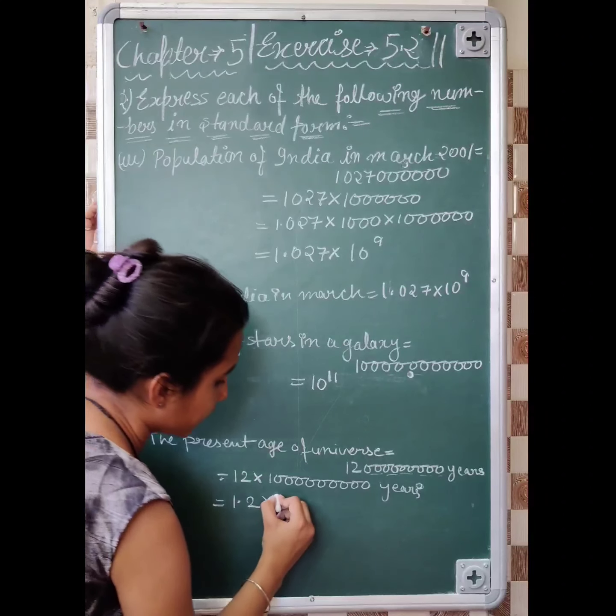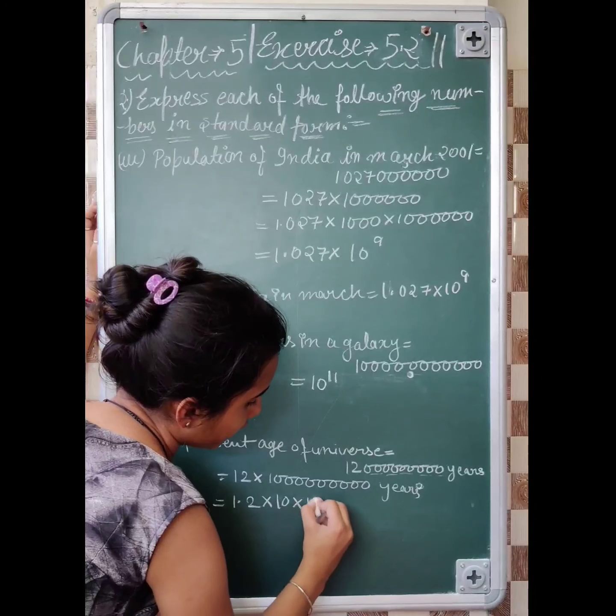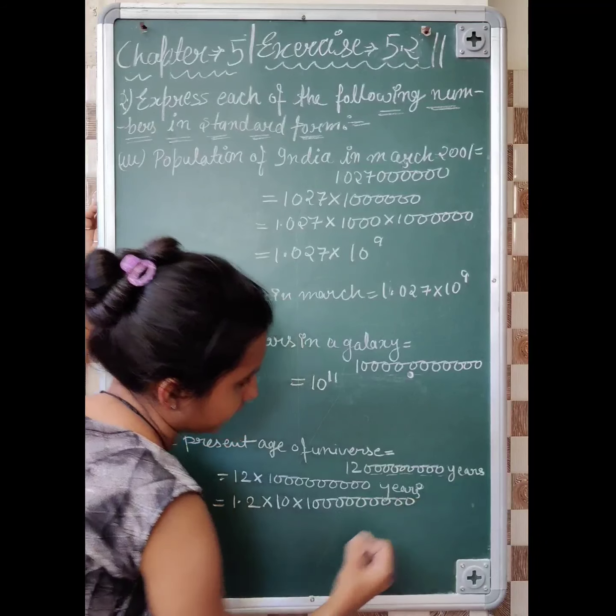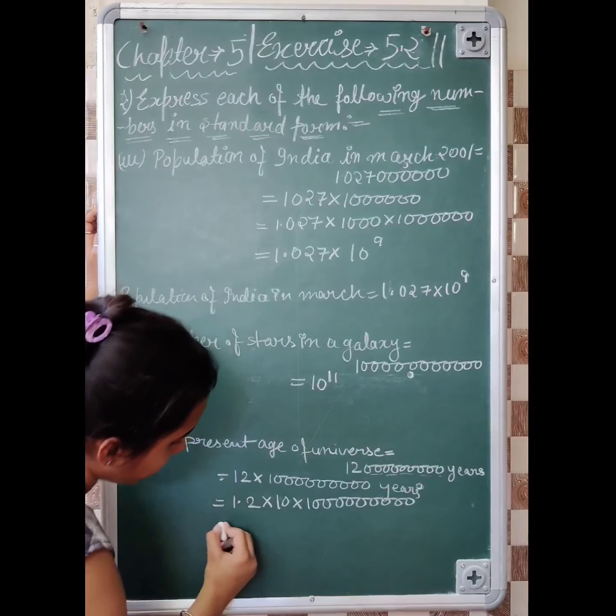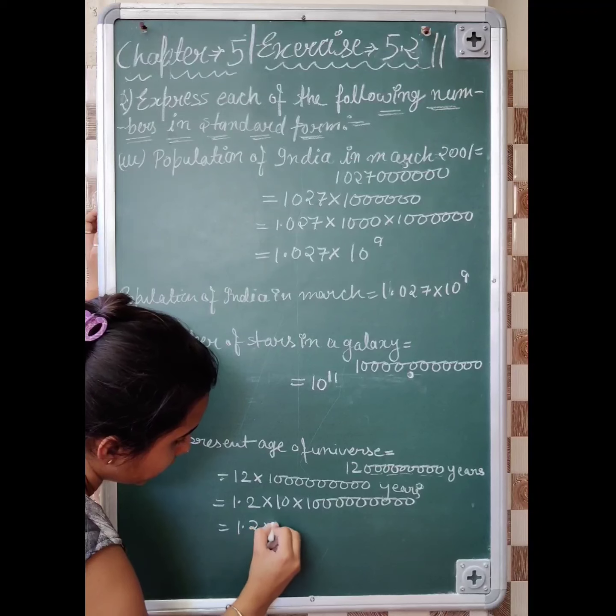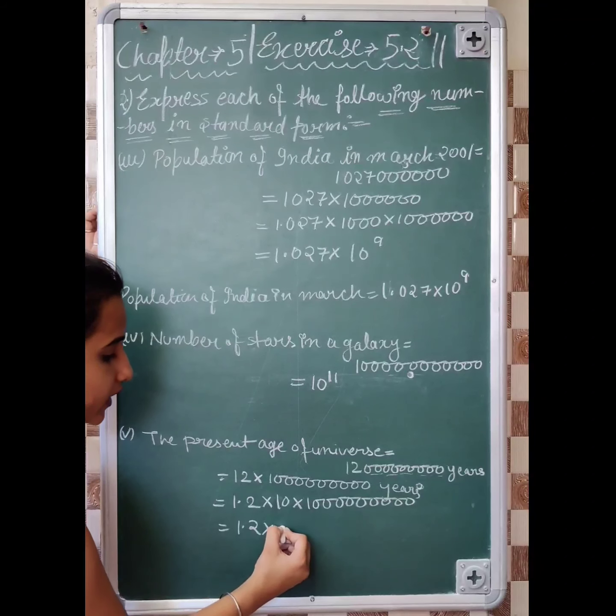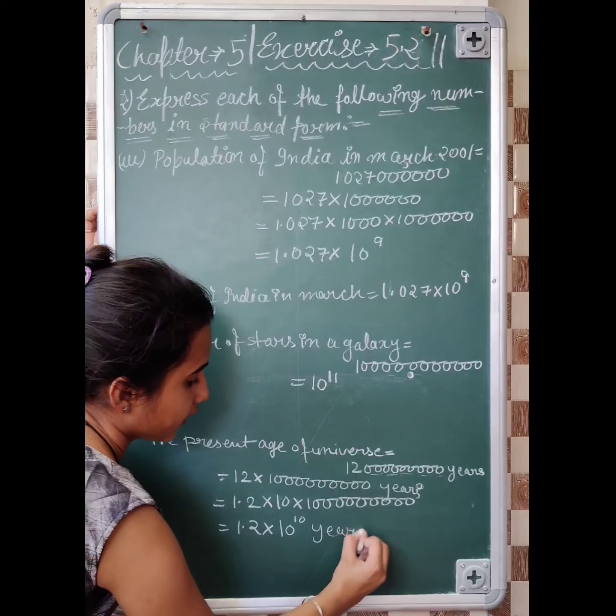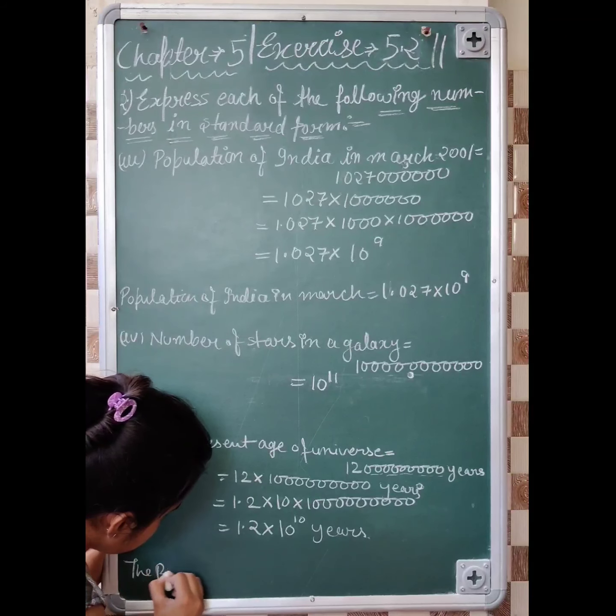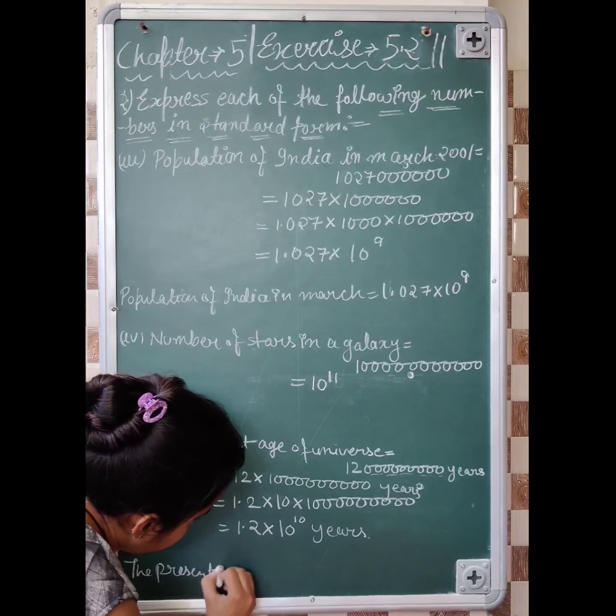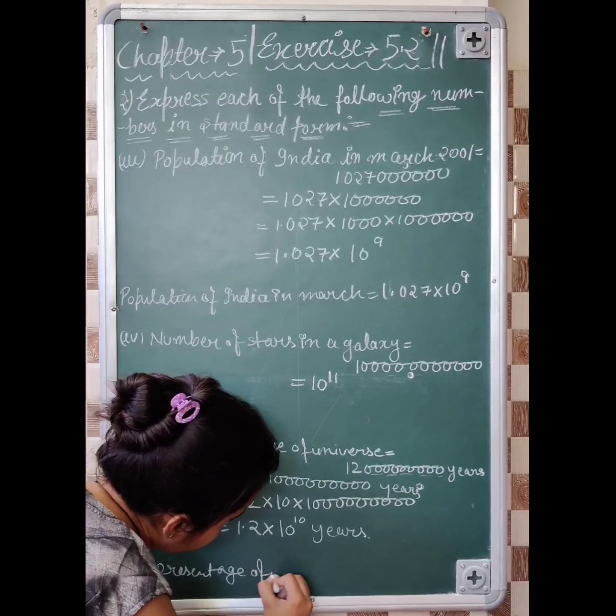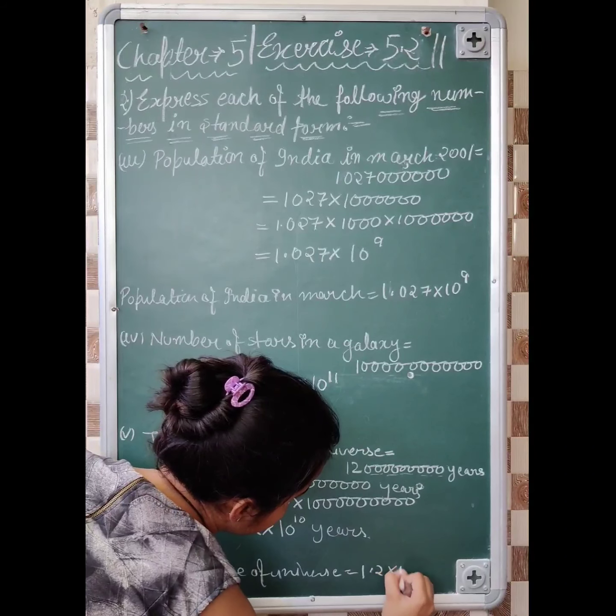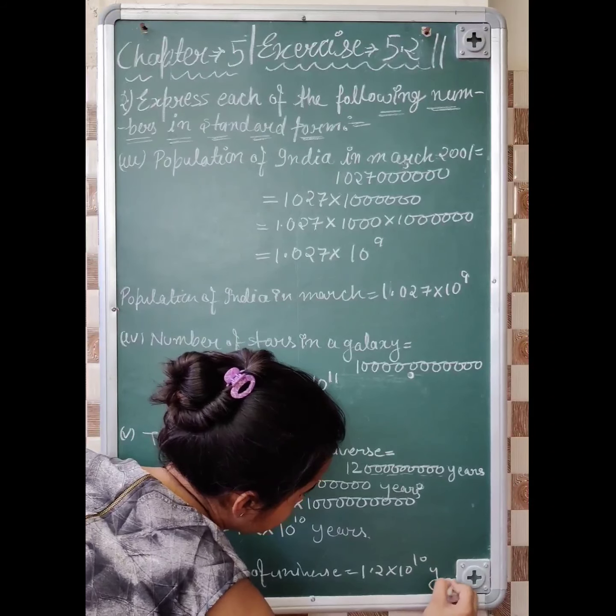How many numbers after decimal? One number, that means 7 digits total. So 1.2 into, 9 zeros after decimal means 10 raised to the power 10 years. The present age of universe is equal to 1.2 into 10 raised to the power 10 years.